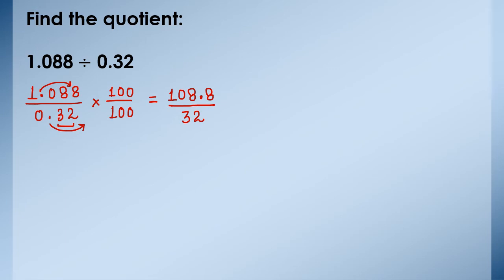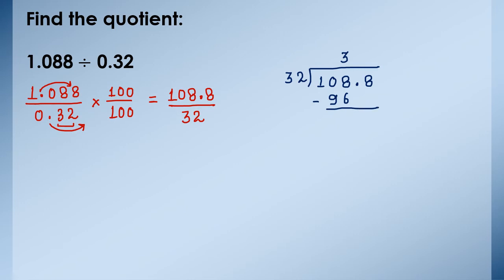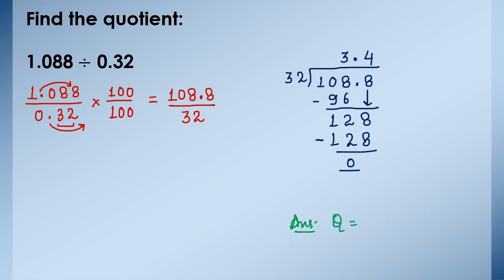Therefore we have to divide 108.8 by 32 now. So 32 into 108.8. 32 threes are 96. Subtract them. 2 and 1 are left. Put this decimal up in the quotient and bring down 8. 32 fours are 128. Remainder is 0. So we got quotient equals 3.4.